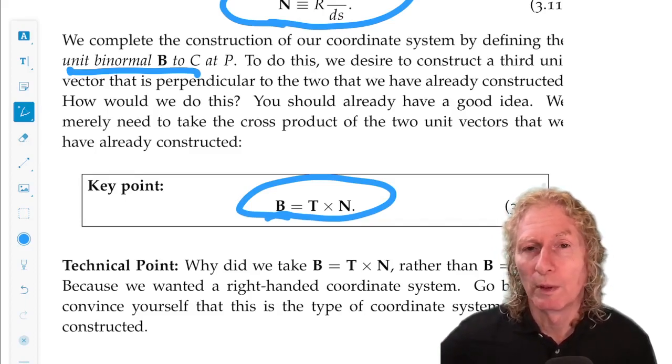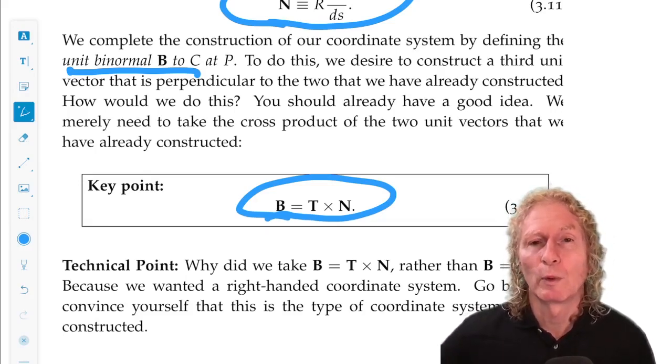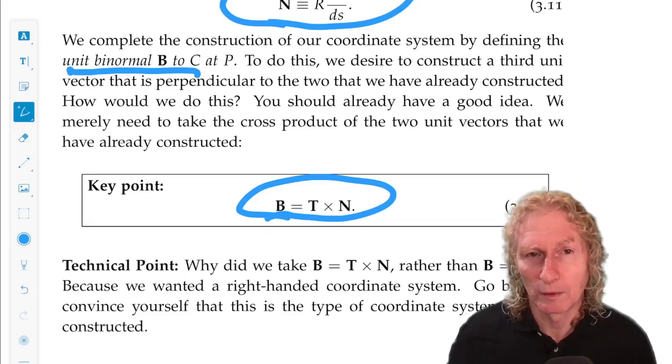And the reason we take T cross N, not N cross T, is we want a right-hand coordinate system. And you can check that for yourself.